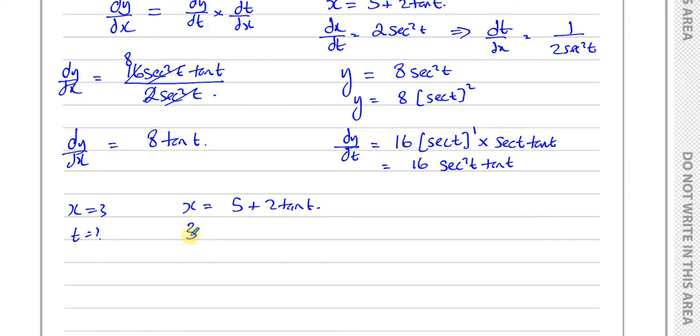So if we replace the x with 3, we have 3 equals 5 plus 2 times tan t. And if I rearrange it, I'll have minus 2 equals 2 tan t. So we can say the tan of t is equal to minus 1. And that's actually what we need. We have 8 times tan t. So we don't actually have to find what t is, because we want what tan t is. Tan t is minus 1 when x equals 3.